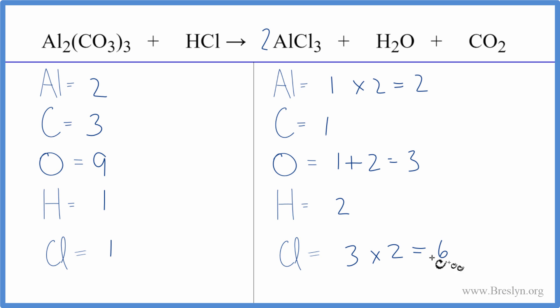We might as well balance the chlorines. I like to leave the oxygens and hydrogens until last. So let's do the chlorines. We put a six in front of the hydrochloric acid, that would mean one times six, that'll give us six chlorine atoms. Those are balanced, and then one times six, that gives us six hydrogen atoms.